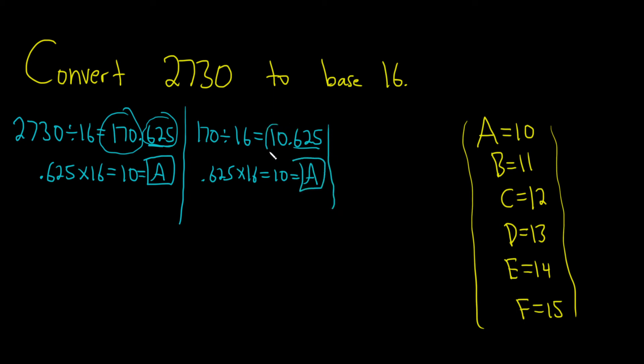Then you do it again, right? You take this number and divide it by 16. So 10 divided by 16 is 0.625. So this is the last step. We know it's the last step because there's a 0 here. Then to find the remainder, you just do 0.625 times 16. We get 10, which is equal to A.